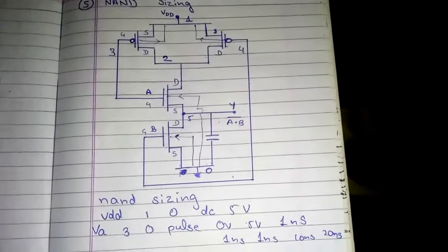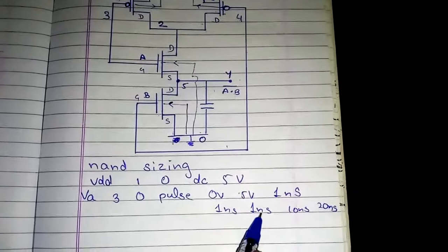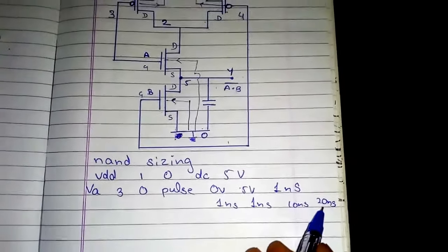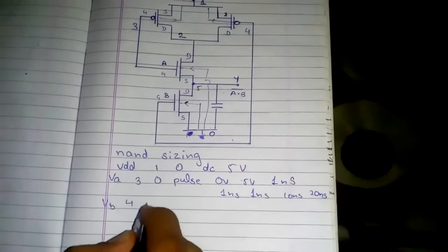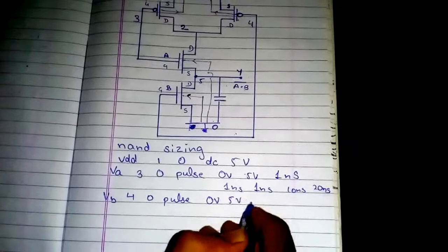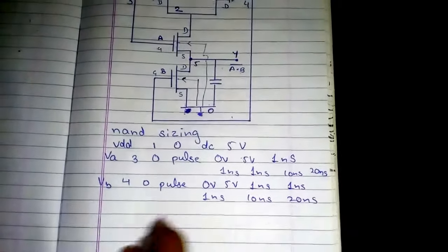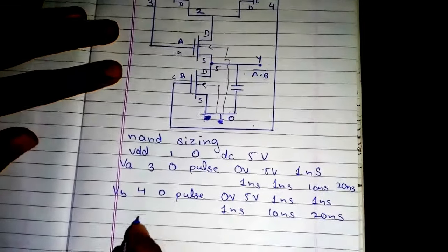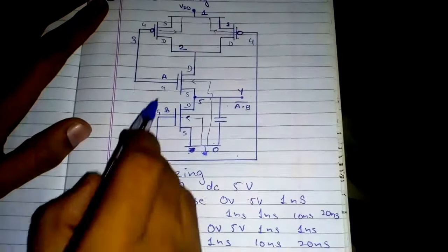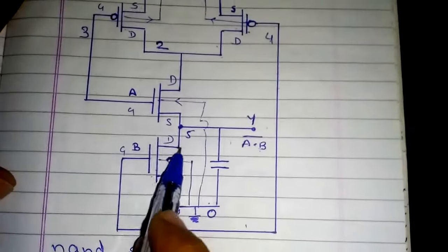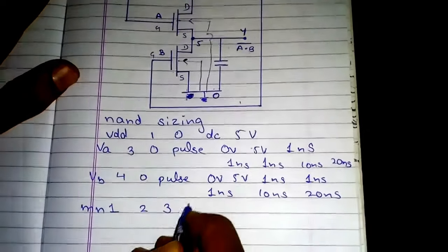The pulse parameters are: delay, rise time, fall time, pulse duration, and time period. For VA: 1 nanosecond delay, 1 nanosecond rise time, 1 nanosecond fall time, 10 nanosecond pulse duration, 20 nanoseconds period. Similarly for VB between nodes 4 and 0, same parameters: 0 volt to 5 volt, 1ns, 1ns, 1ns, 10ns, 20ns. Then MN1 is between nodes 2, 3, 5, and 0.